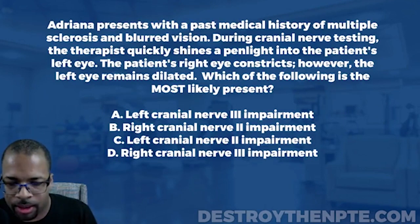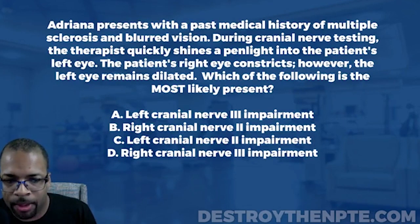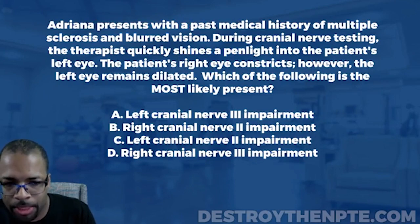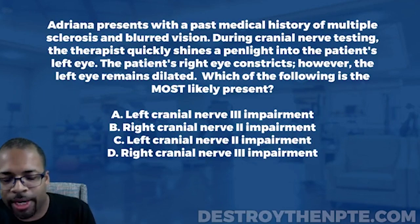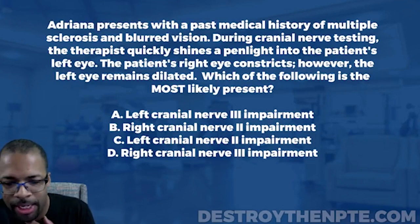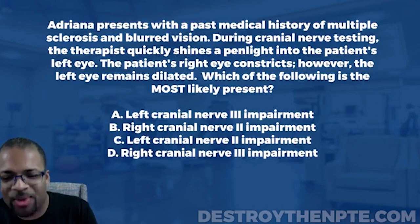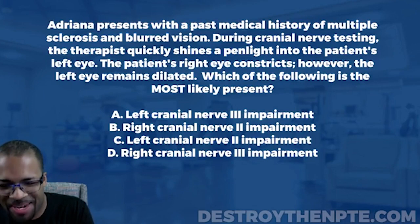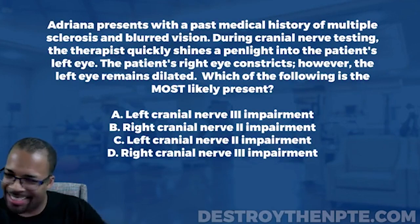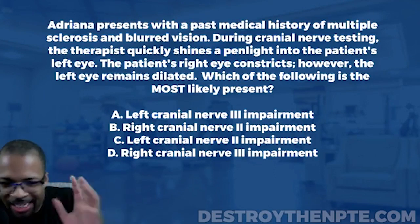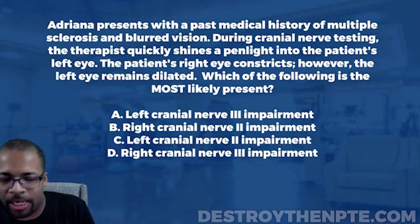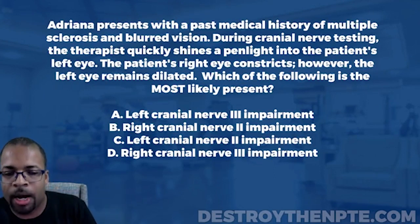Which of the following is the most likely finding? A: left cranial nerve 3 impairment, B: right cranial nerve 2 impairment, C: left cranial nerve 2 impairment, and D: right cranial nerve 3 impairment. There are a lot of left/right opposites here that you have to play with.